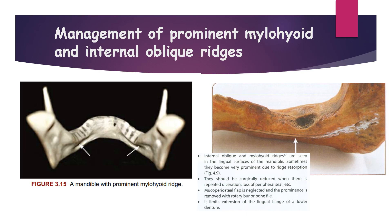Regarding management of prominent mylohyoid and internal oblique ridges: these ridges are seen on the lingual surfaces of the mandible. Sometimes they become very prominent due to ridge resorption, producing a sharp edge that causes pain. They should be surgically reduced when there is repeated ulceration or loss of peripheral seal. The prominence is removed with a rotary burr or bone file, as it limits the extension of the lingual flange of the lower denture.